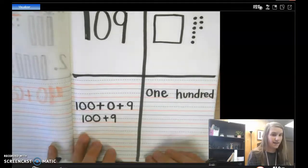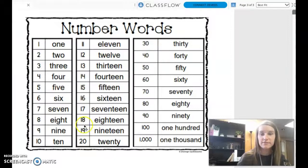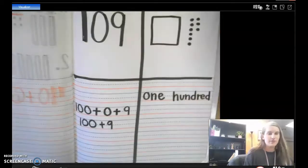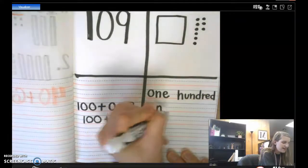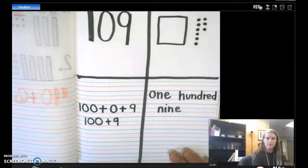And then we need 9. We can use our word wall for 9. Here's the number 9. So let's write that down in our journals. We also notice it has that magic or silent E at the end. N-I-N-E. One hundred nine.